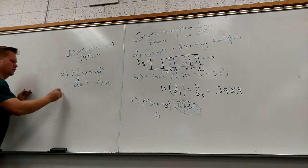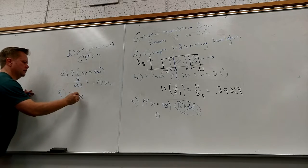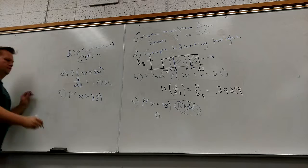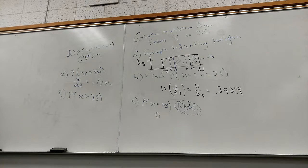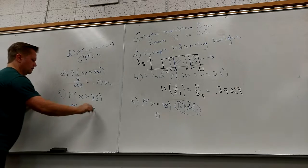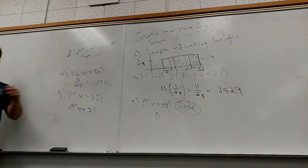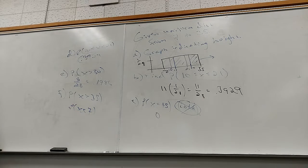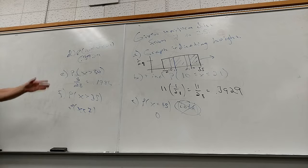So what about this one? What's the probability that x is greater than 35? Zero. Zero. What's the probability that x is less than 7? Zero. Okay, all right. Because where's the only place that's possible from 7 to 35?